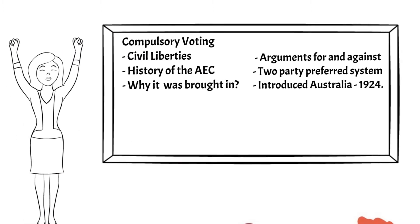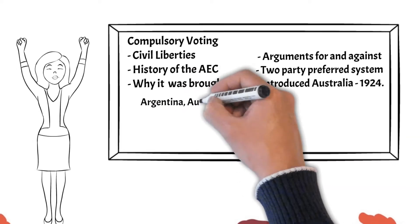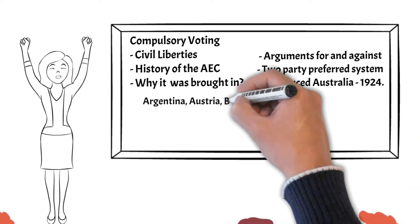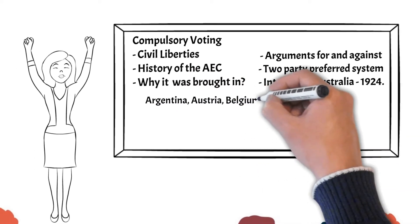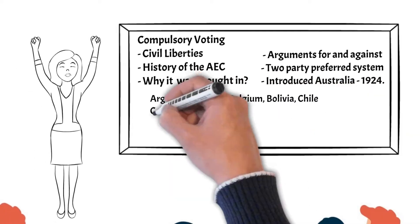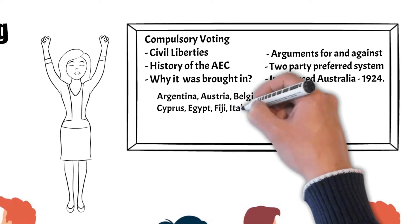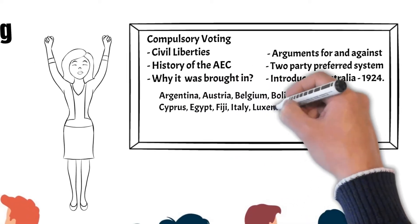Compulsory voting, whilst most synonymous with Australia, is by no means limited to Australia. Many other nations — 23 in total — have some form of compulsory voting.